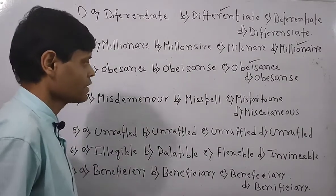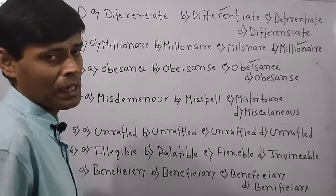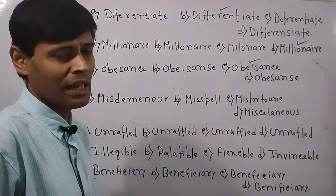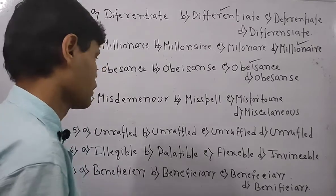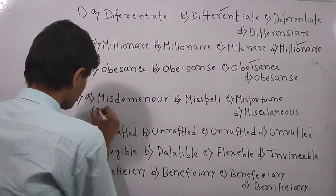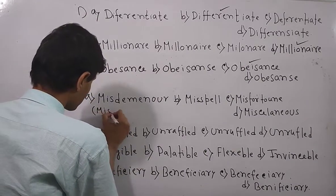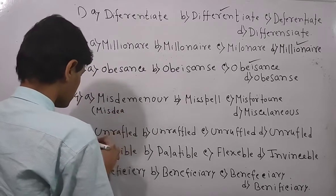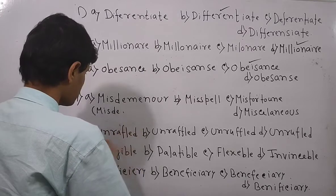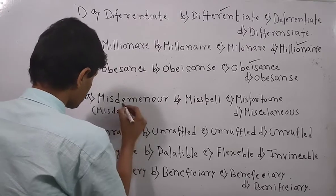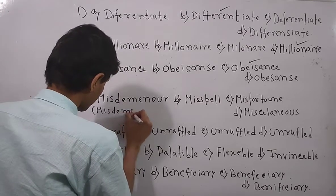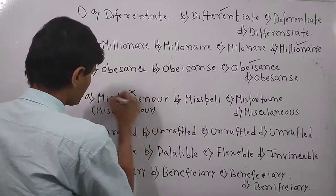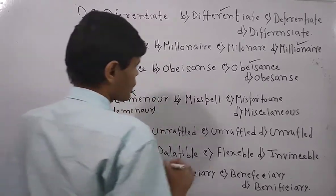Now look over the next question. The word is 'misdemeanor.' The correct spelling is M-I-S-D-E-M-E-A-N-O-U-R. One option starting with M-I-S-D-E-A is the wrong word. The option 'misdemeanor' that looks okay is option B and is the right answer.